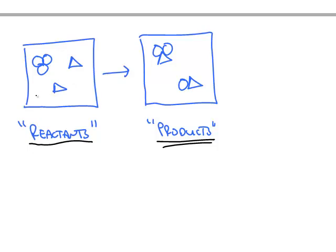So here we have two different elements. One is represented by a circle, and the other is represented by a triangle. Notice the element that's given by the circle has three atoms connected together. So we have a molecule made up of three identical atoms.